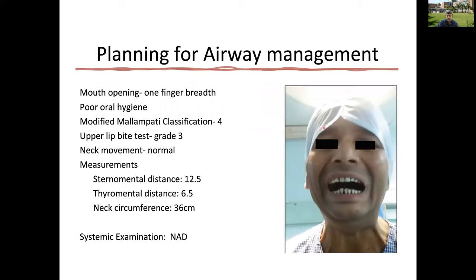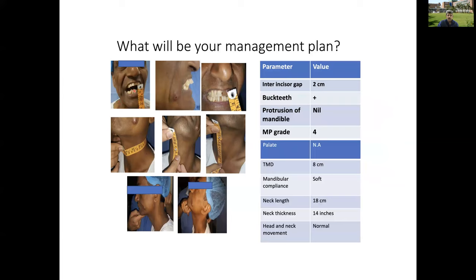A common clinical picture: a patient with reduced mouth opening, poor dental hygiene, Mallampati score IV because mouth opening is reduced, they are not able to protrude the tongue properly, neck movements usually normal, upper lip bite test grade 3. Another patient may have reduced mouth opening of 2 cm, protruding teeth, Mallampati grade 4, thyromental distance 8 cm, neck thickness 14 inches, and limited head and neck movements.